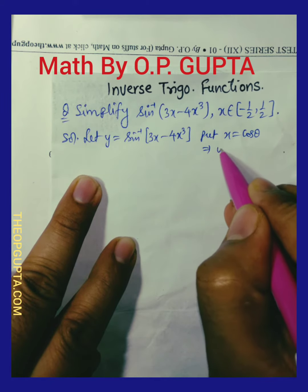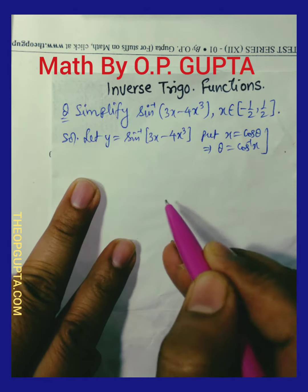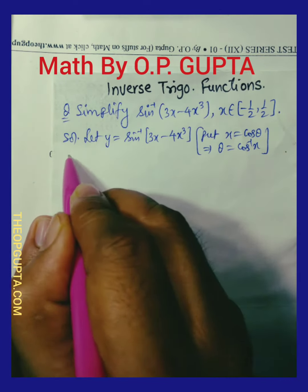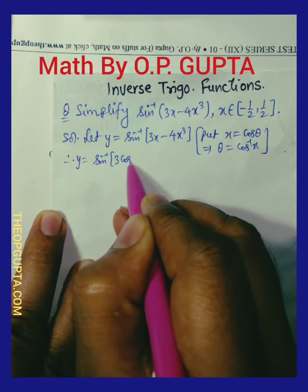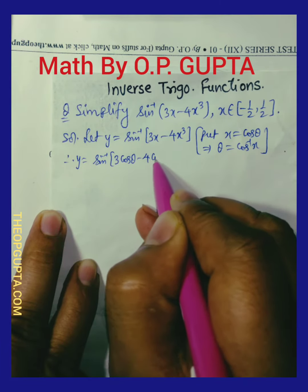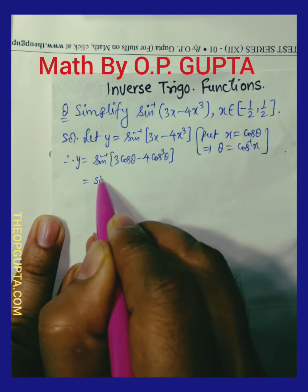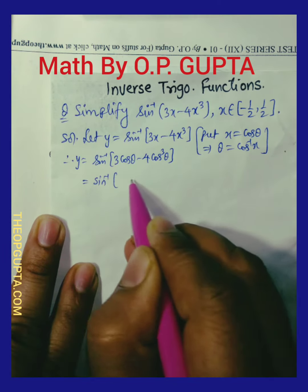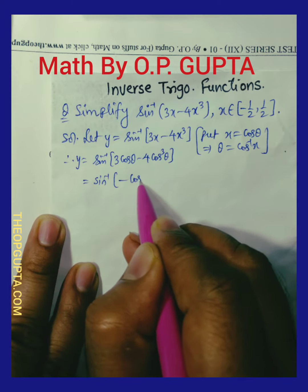You can see theta is cos inverse of x. And now y will be sine inverse of thrice cos theta minus 4 cos cube theta. This is negative of cos 3 theta, means cos 3 theta. I was referring to the formula.